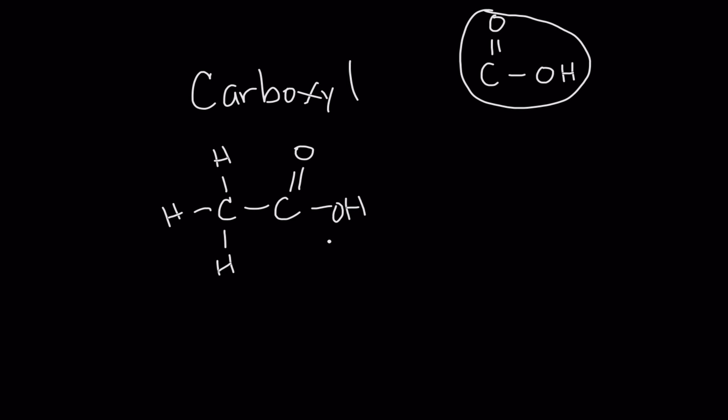Our next functional group is a carboxyl group. Happens to be my favorite, I like to say carboxyl, it makes you sound smart when you say carboxyl. If we take an ethane backbone, do CH3 as we had before, and here on this second carbon we add a double bonded oxygen and an OH. This is what we call a carboxyl group. So a carboxyl group is a carbon double bonded to an oxygen and a single bond to an OH.